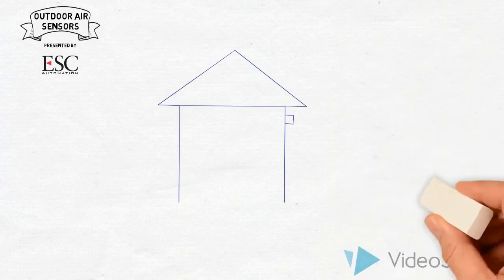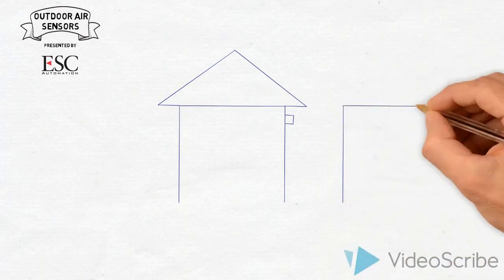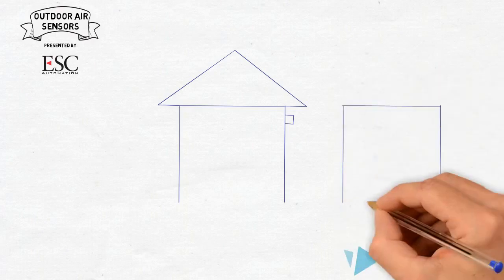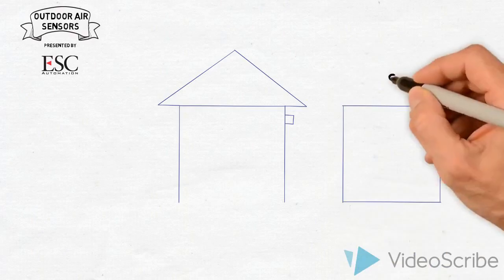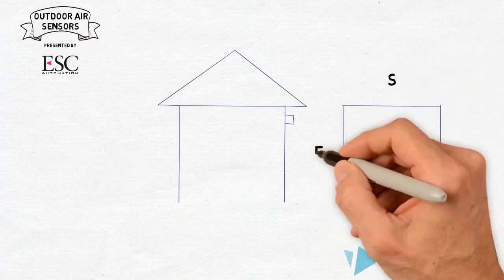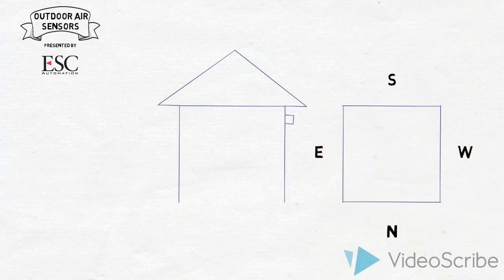So you want to go on the side of the building. We also want to make sure that we're on the north side of the building. So if this is the south and this is the north, and we got east and west, we want to put the sensor somewhere on this side of the building.